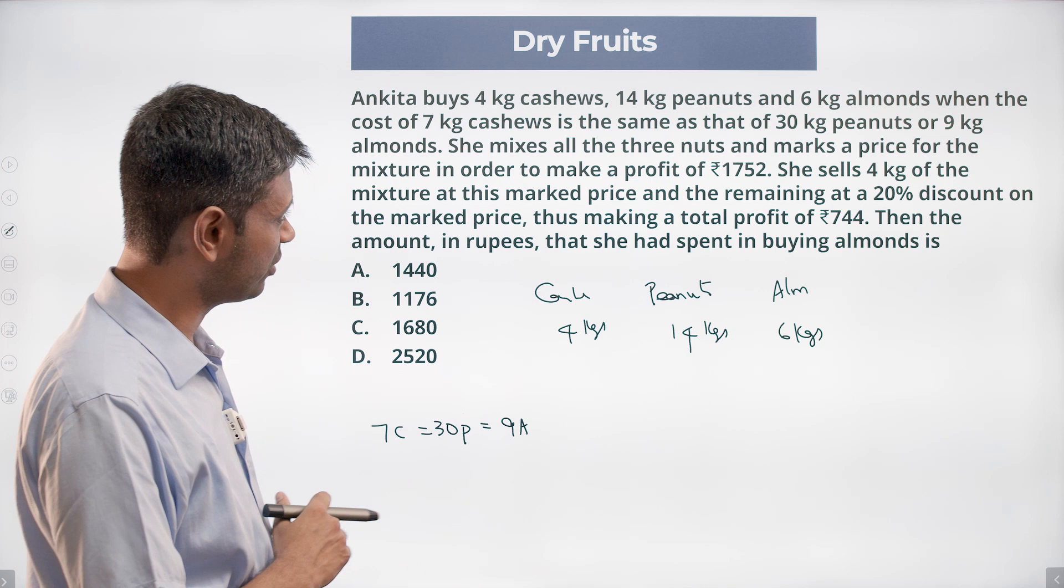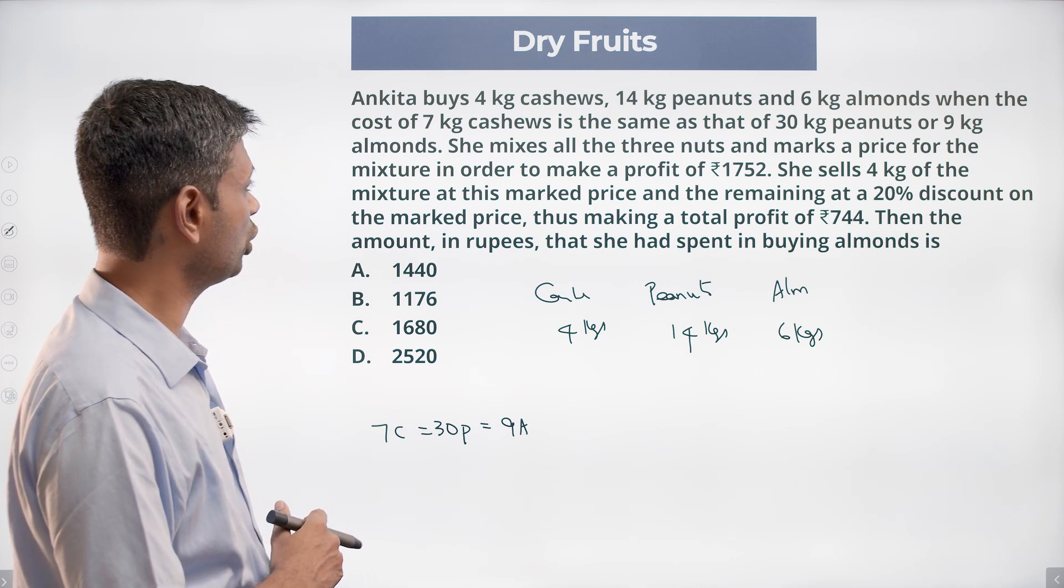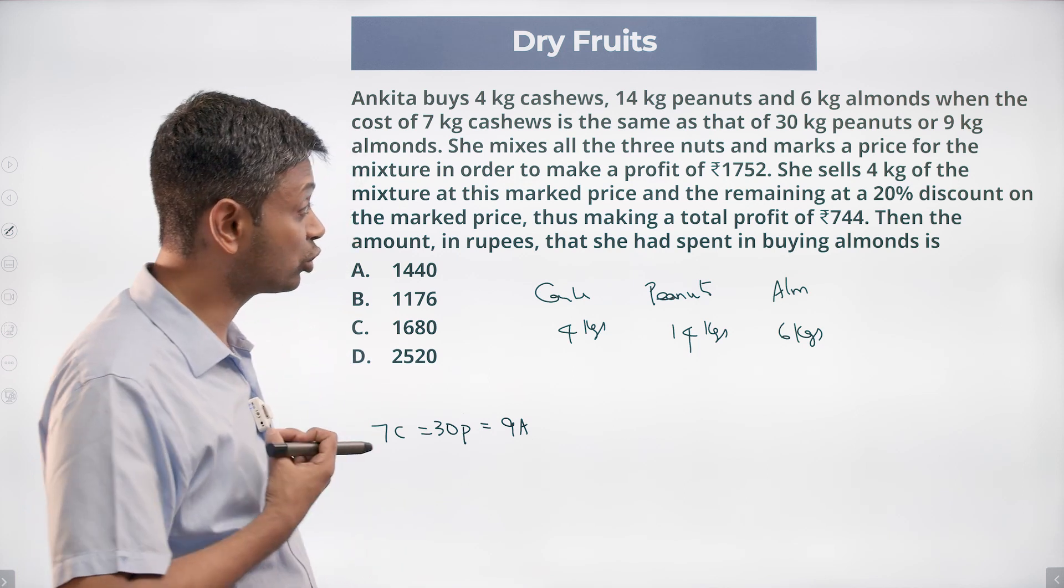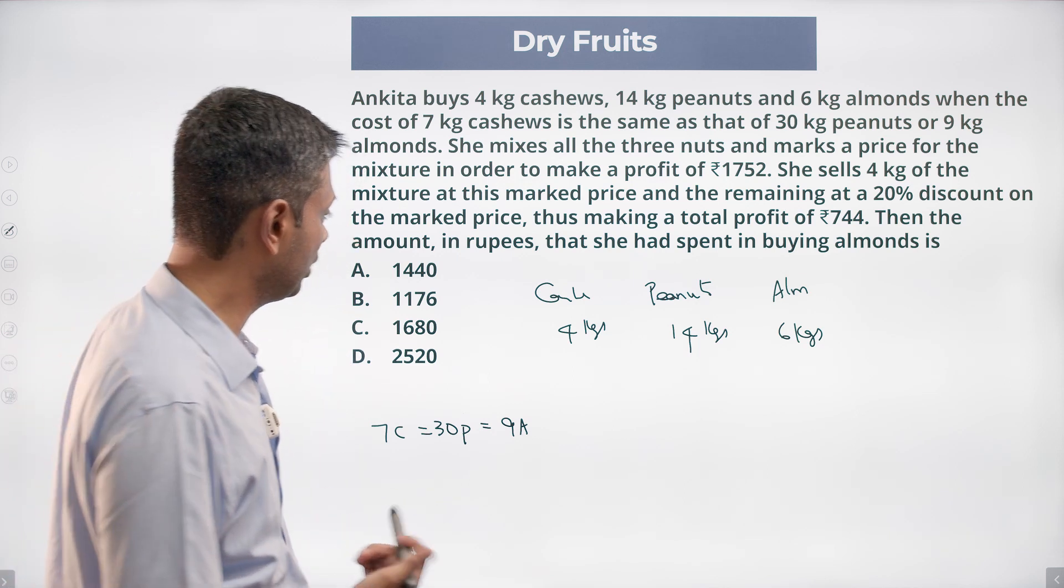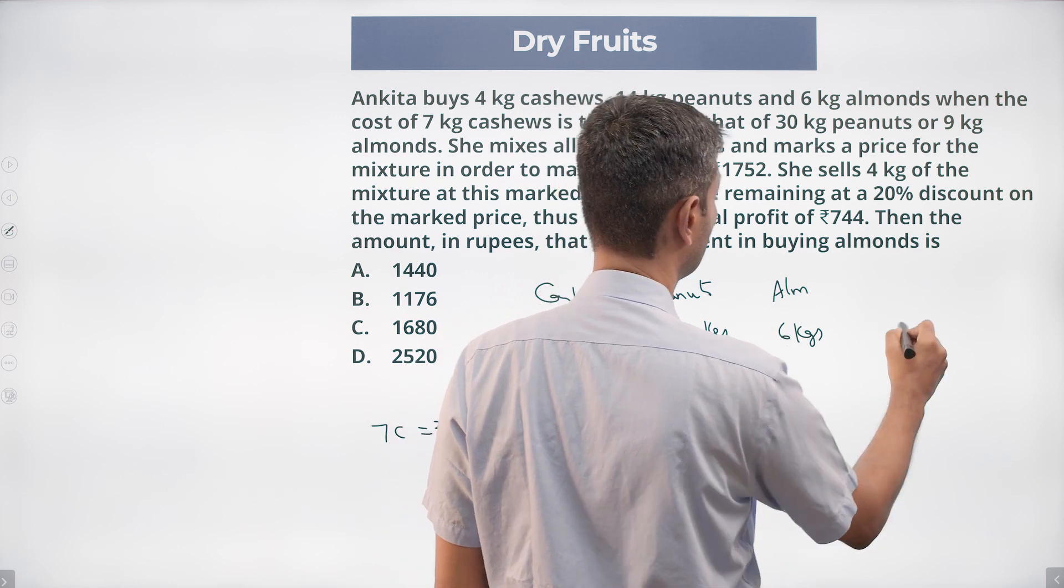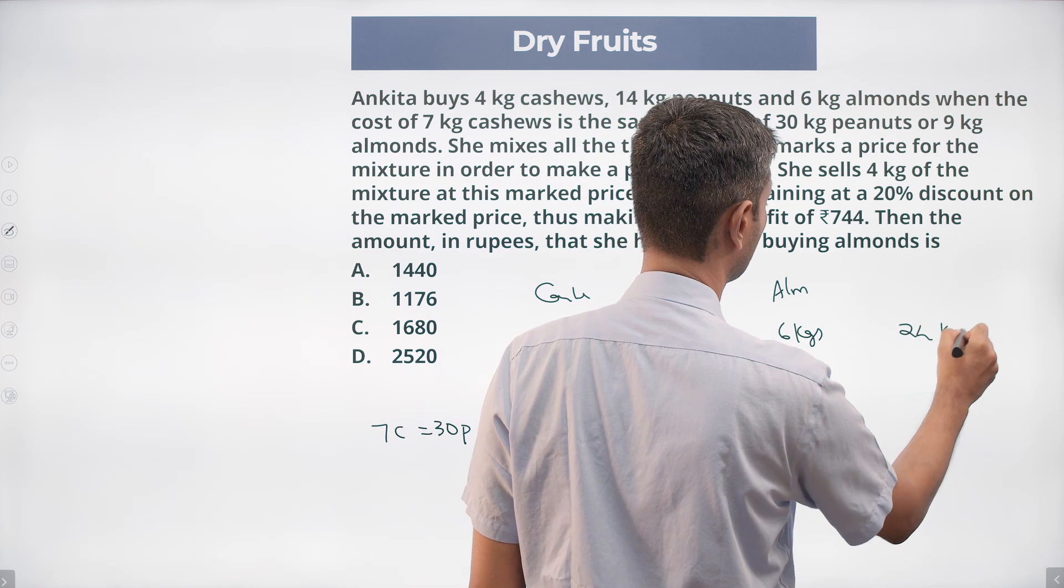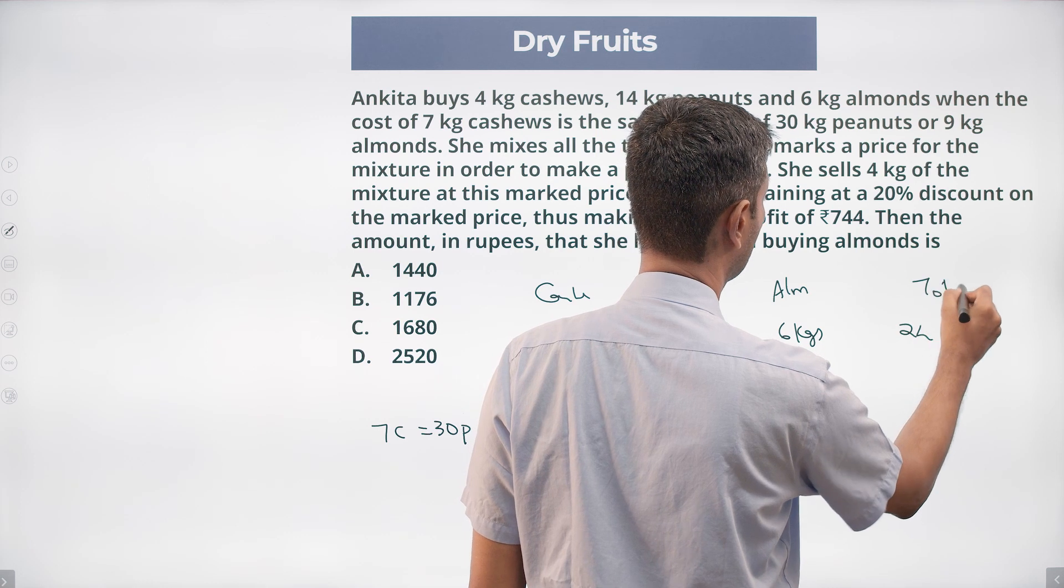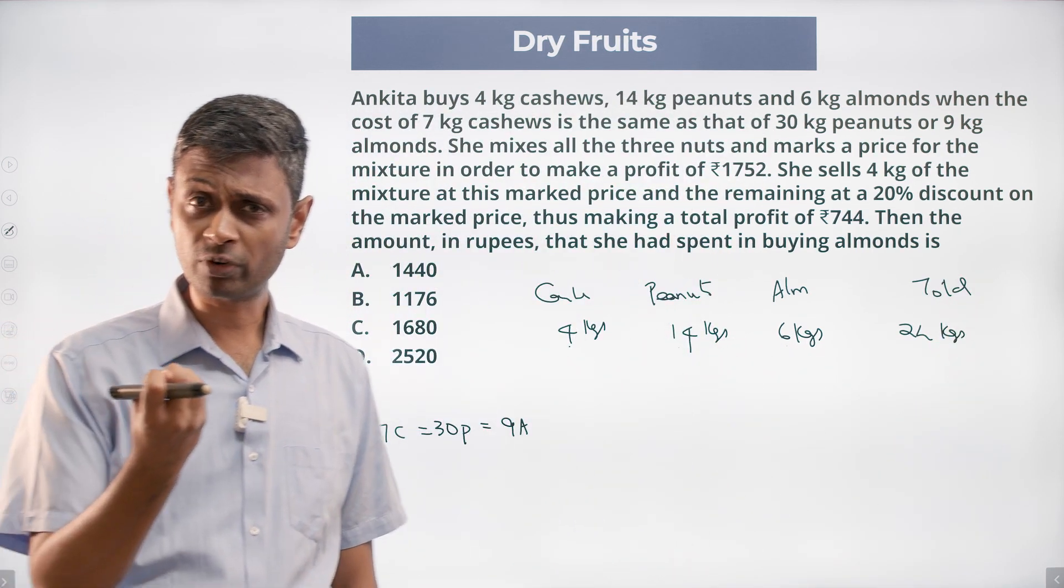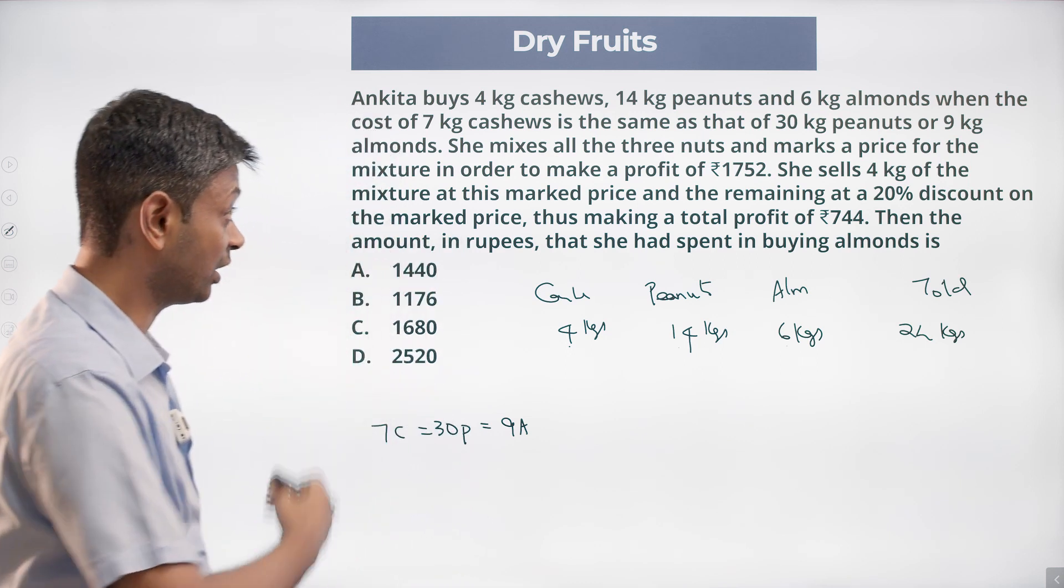She mixes all three nuts and marks a price for the mixture in order to make a profit of 1752. She wants to make, how many kilograms? She has 4 plus 14 plus 6, 24 kilograms. And she wants to make a profit of 1752, that much profit she wants to make, which is rather nice.